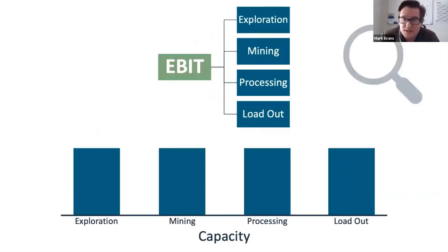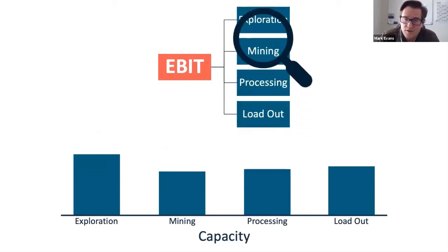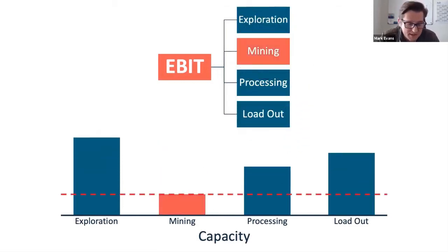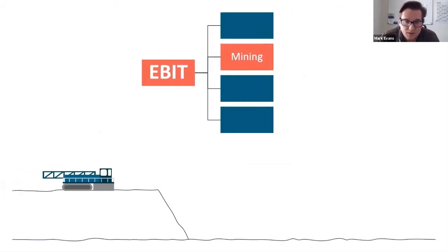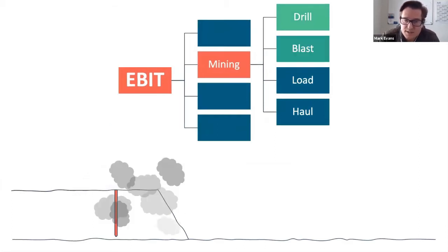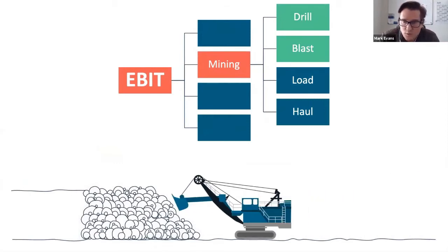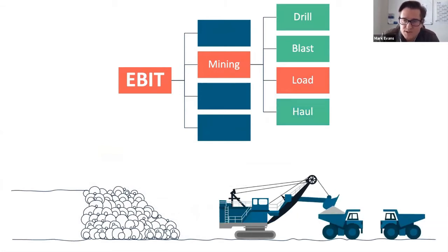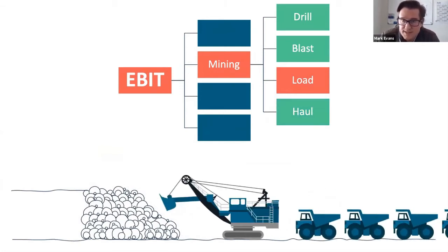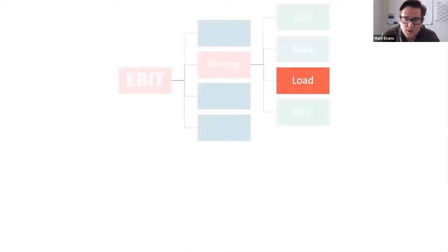In order to do that you need to have a very clear understanding of where your operational constraints are. In this example, mining is the constraint. Then within mining, understand where the constraint is. If we're not working and applying the new technologies or working on the bottleneck of our operation, then we're not going to see the bottom end results required to deliver the business case.